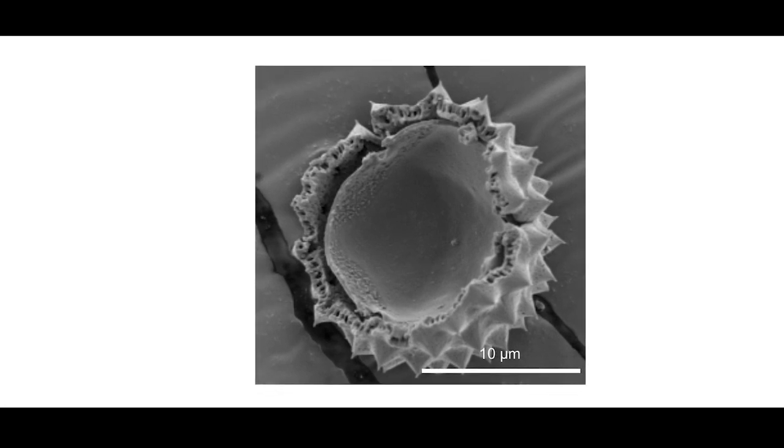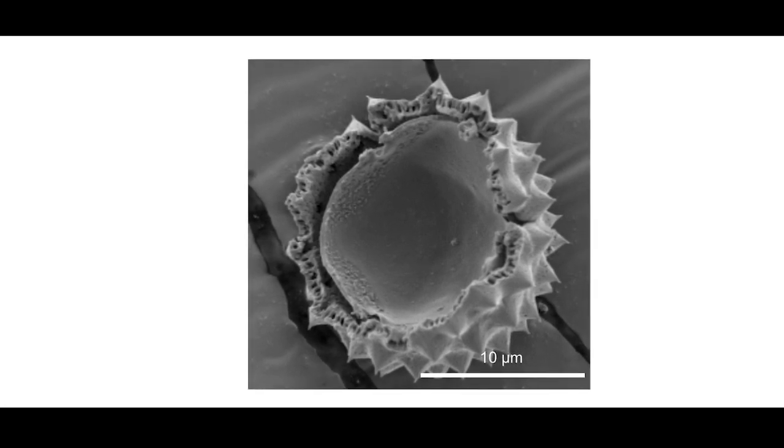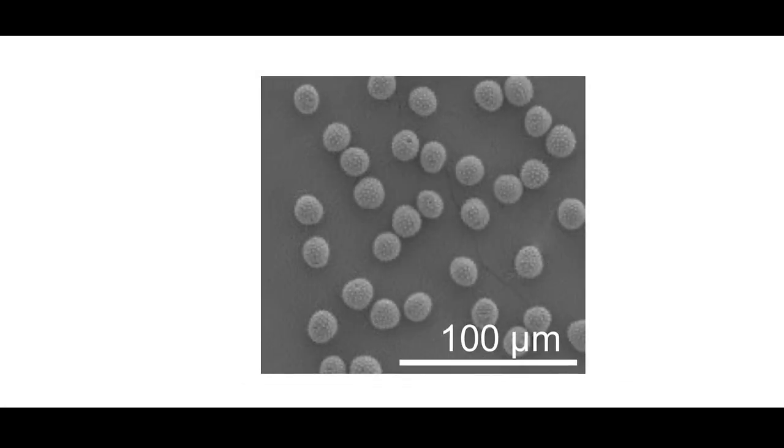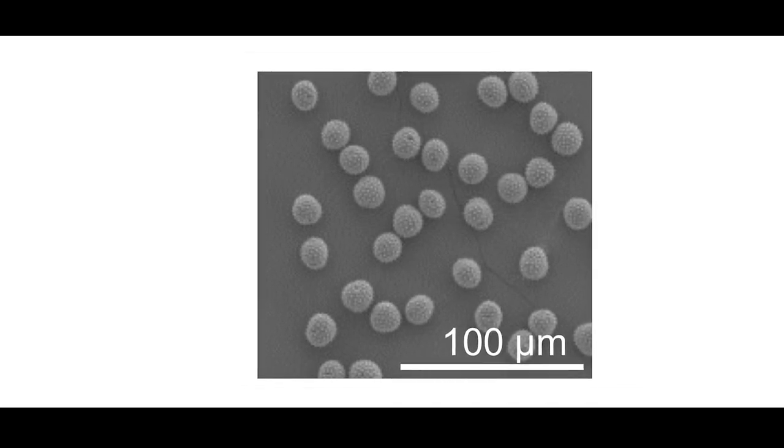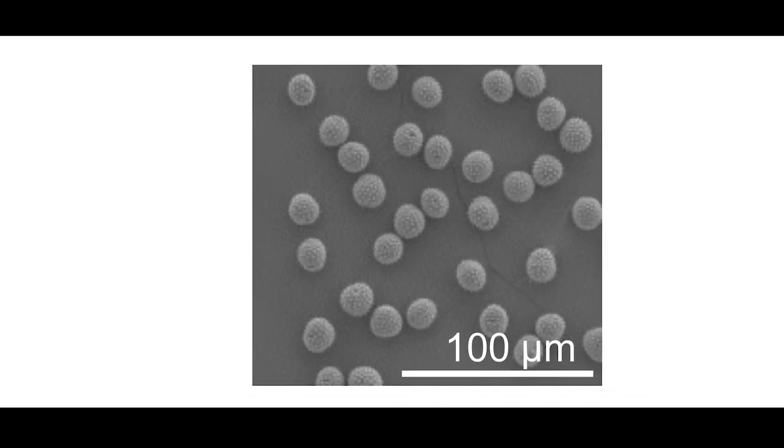However, when they switched the order of the two steps, so that they treated the pollen with an acid before the base, the resulting pollen shells were hollowed out and unclumped.